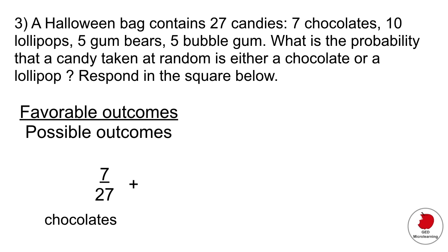Seven right because there's seven chocolates so you have seven opportunities to pull out a chocolate out of 27. And then they're telling us that you could also pull out a lollipop so in this case the favorable outcome would be 10 over 27. And all you have to do now is just add that fraction across and it would give you 17 over 27.